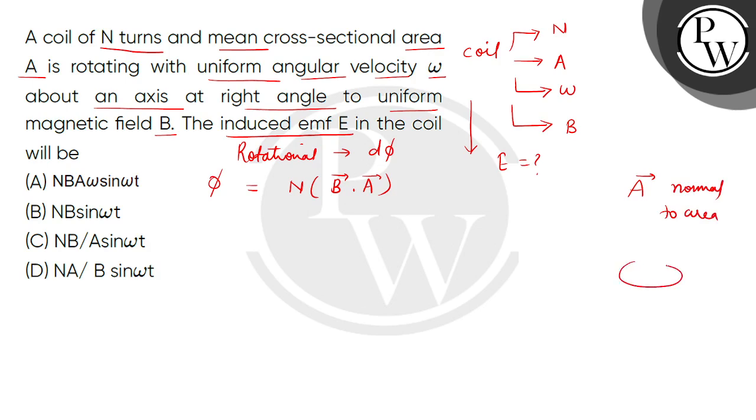If we take the coil like this, the area vector will be like this. This is the area vector. And this is how the magnetic field is coming - it is perpendicular, then the flux will be maximum.